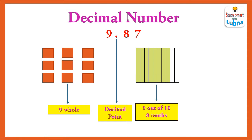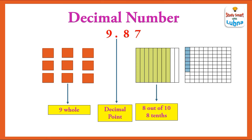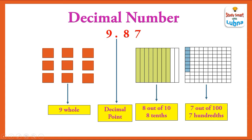We also call it eight tenths. Similarly, the 7 has a place value of hundredths in the decimal number. We can represent it through a figure where the total parts are one hundred and the colored parts are seven — seven out of one hundred, or seven hundredths. So 9.87 is 9 whole, 8 tenths, and 7 hundredths.